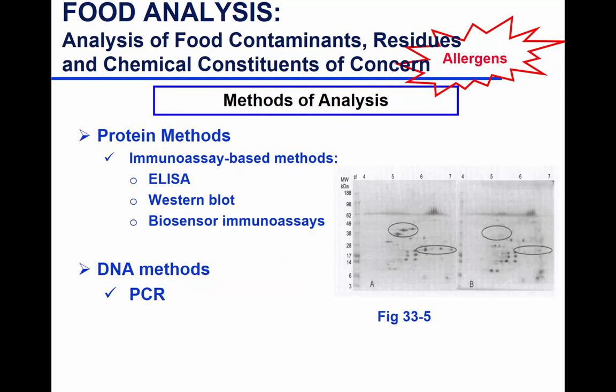There are two common categories of methods for measuring allergens: protein-based methods and DNA methods. Protein-based methods are based on amino acids — you can be quantitative by ELISA, or qualitative by western blot, or use biosensors. Here's an example of a western blot: you run 2D gels, transfer to a PVDF membrane, incubate with the antibody and a labeled secondary antibody, and then you see spots indicative of antigen-antibody interaction, showing which antigens are present and reactive.